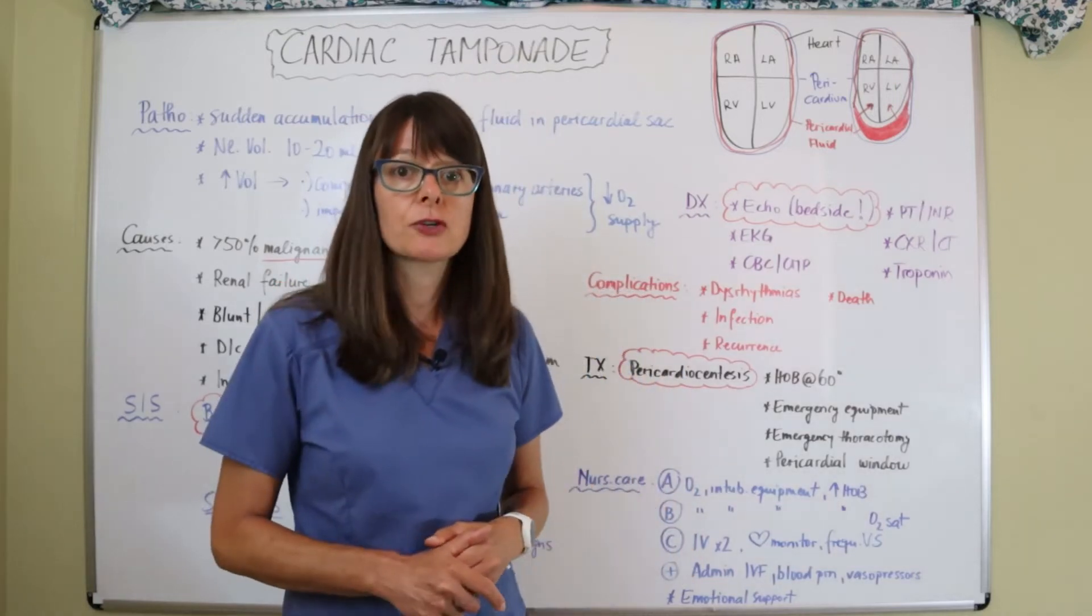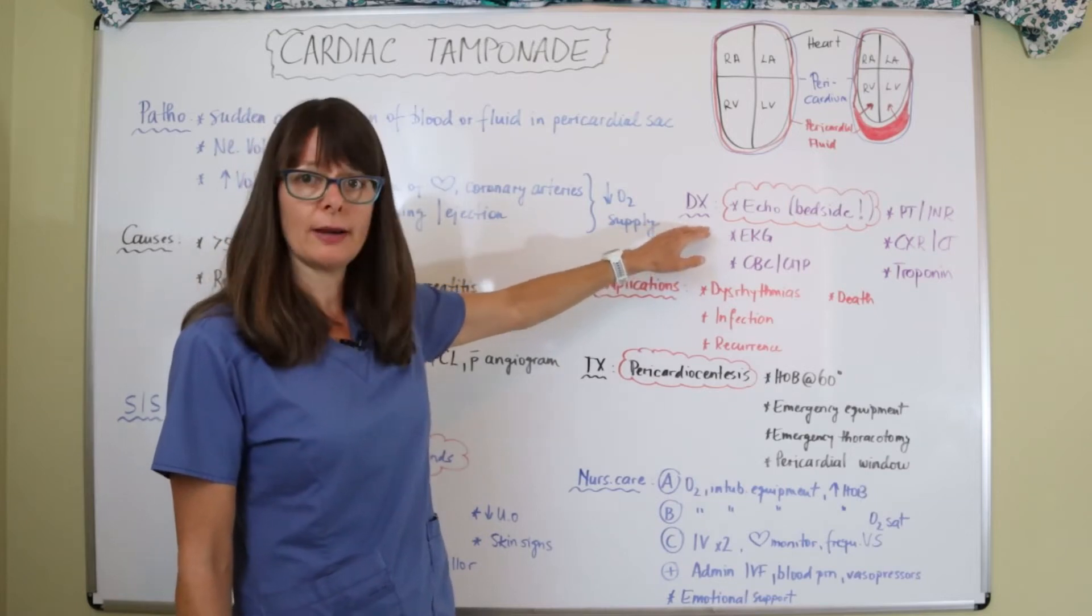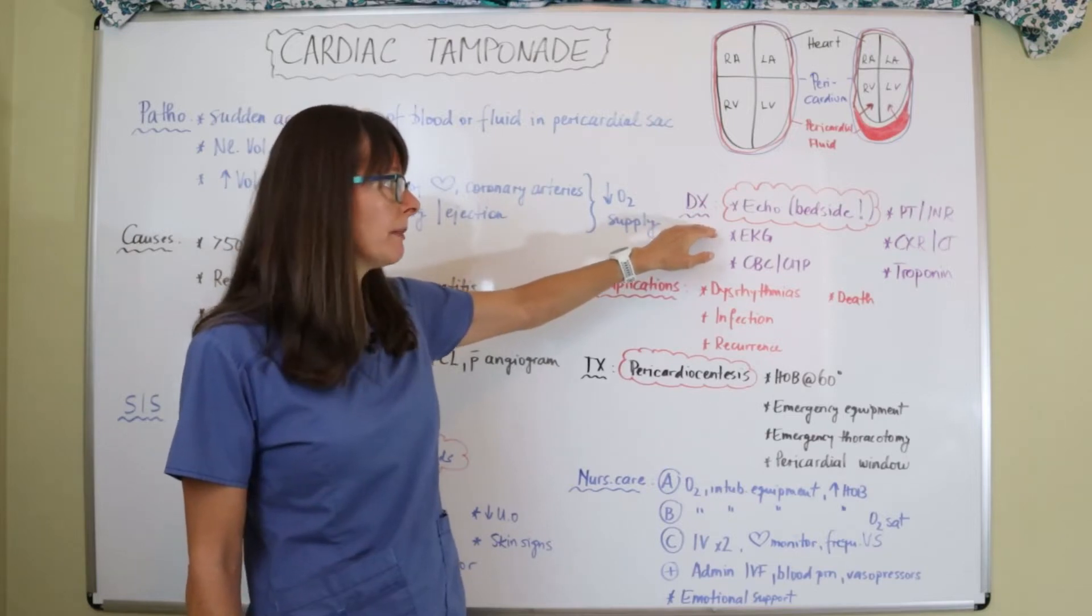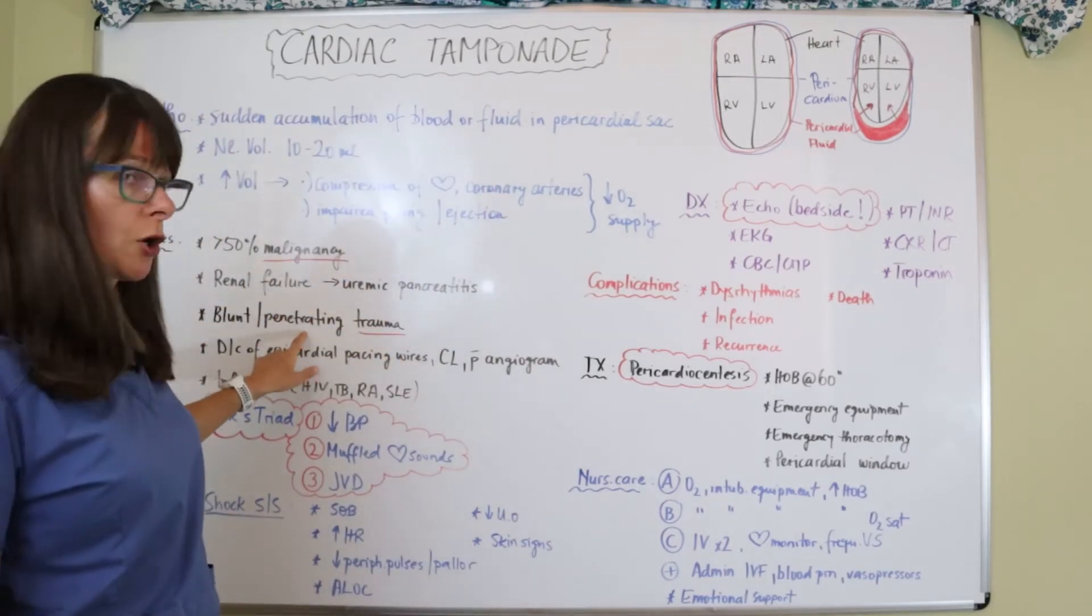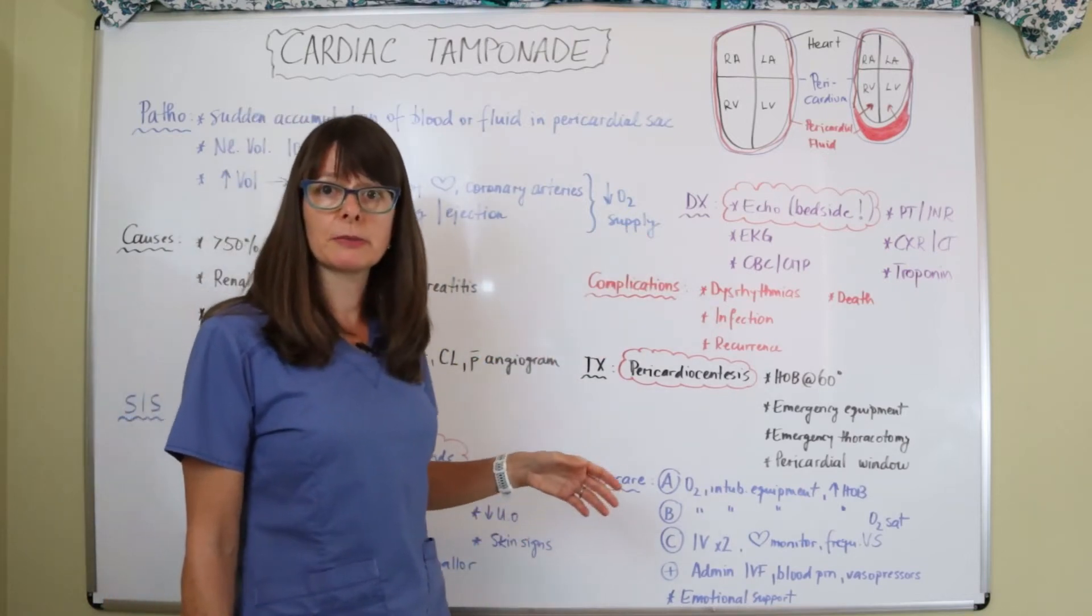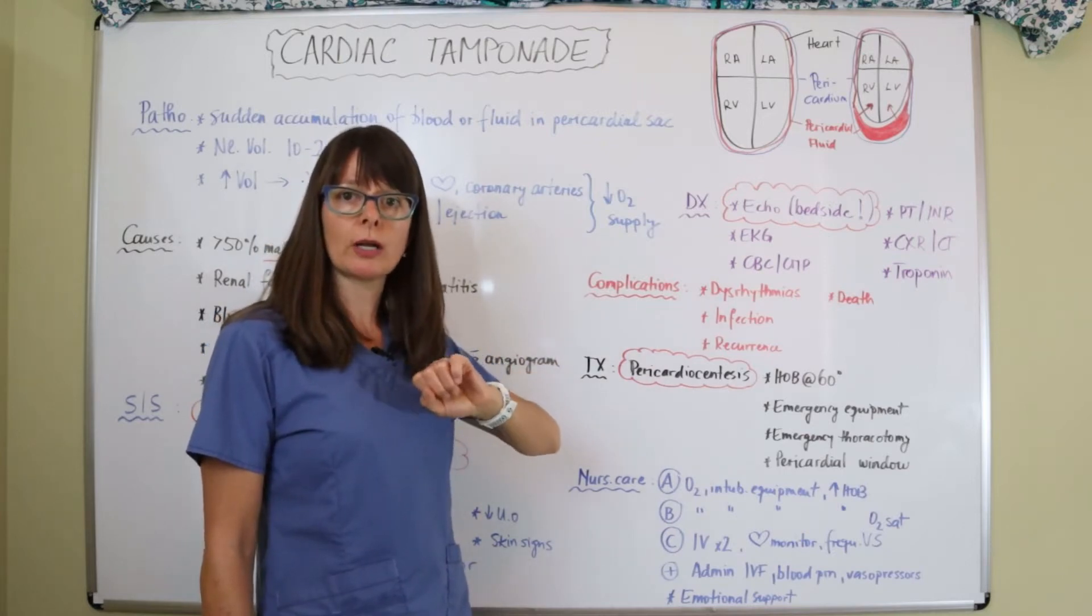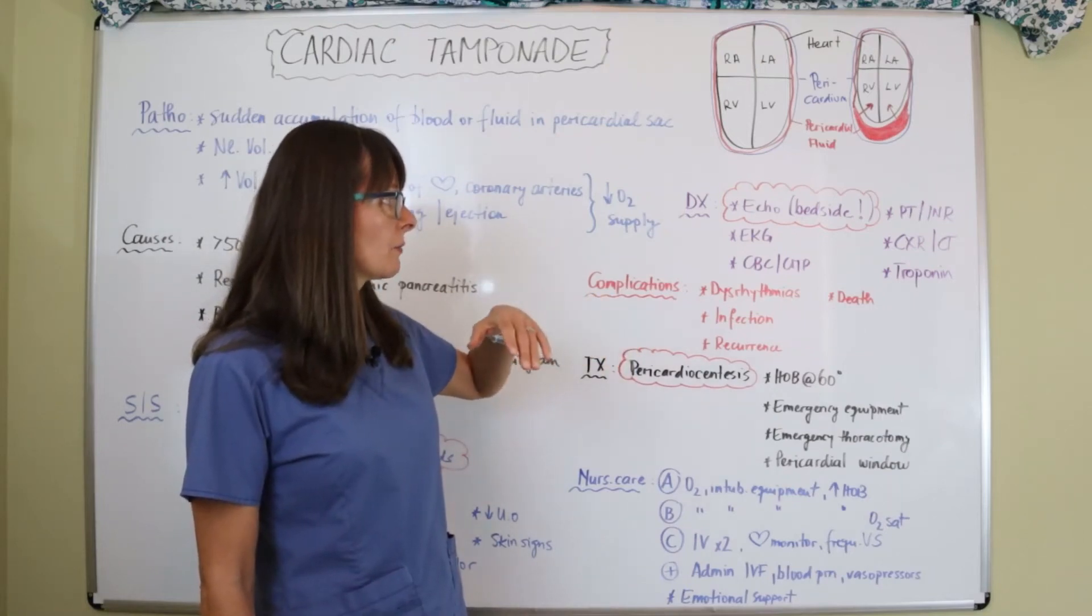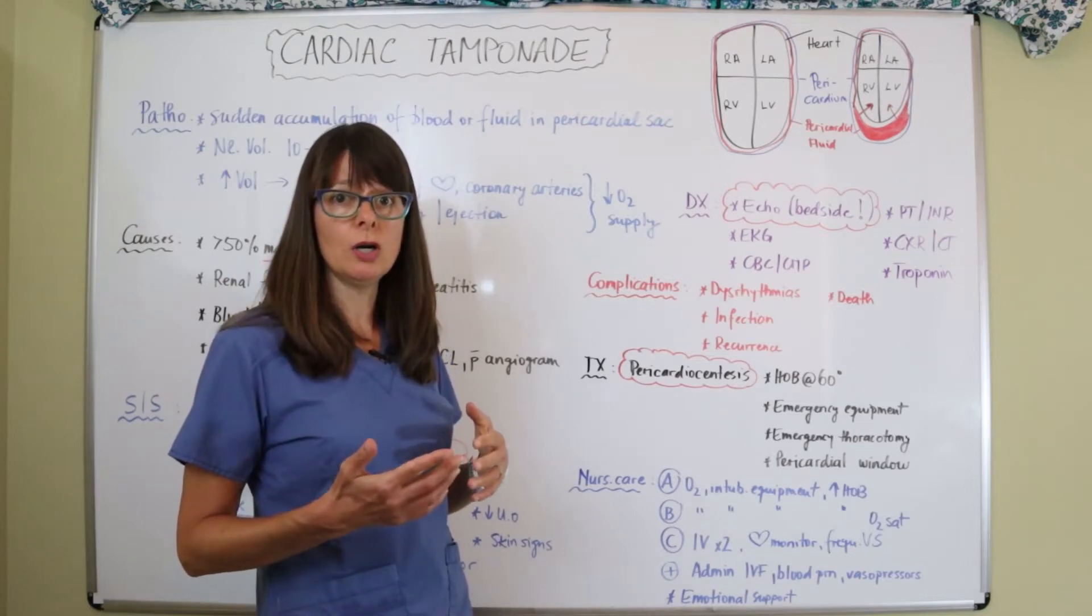In terms of diagnostic tests, an echocardiogram will be a pretty indicative test of the fluid accumulation around the heart. Many times it's done at the bedside, so if this is somebody that comes in after a blunt trauma to the chest or even a penetrating trauma to the chest and there are these signs and symptoms of the Beck's triad, the ER doc will just pull up the bedside echocardiogram, take a quick look, and then see that there's an effusion or even a tamponade and then take care of it from there. But if this is something with malignancy, sometimes it can develop a little bit slower.